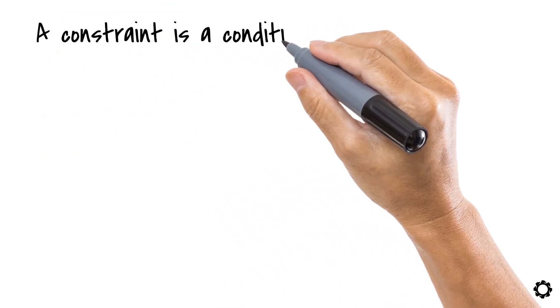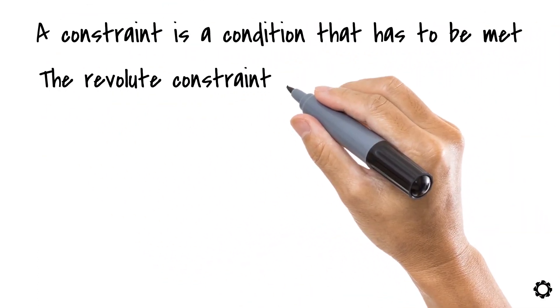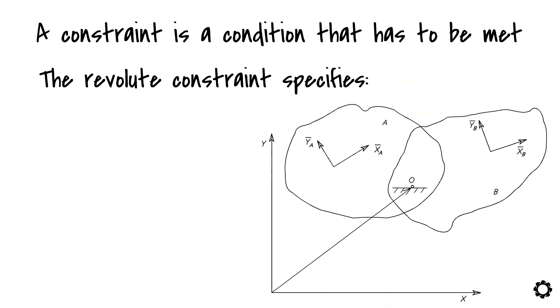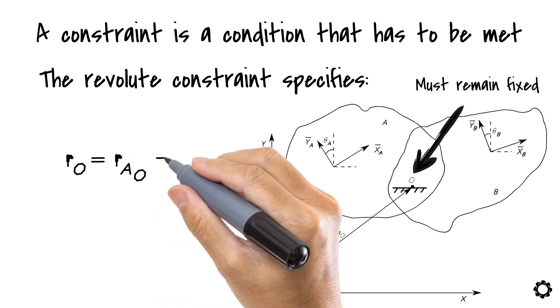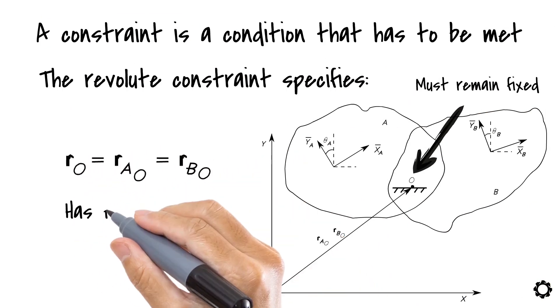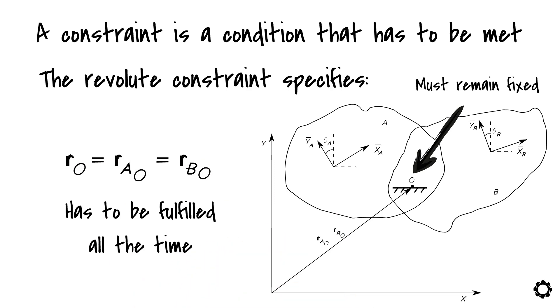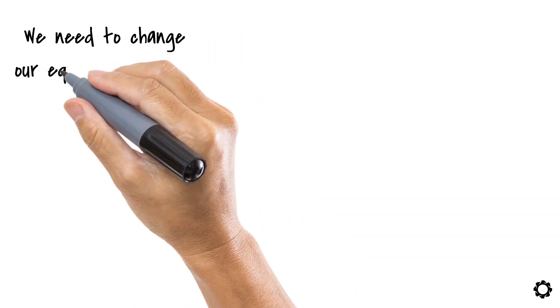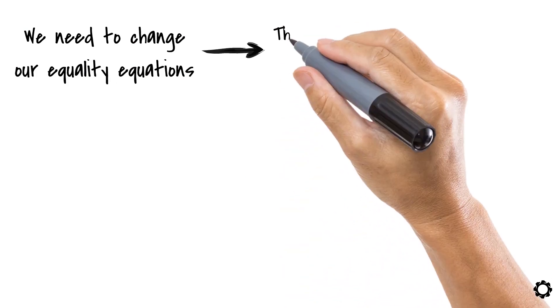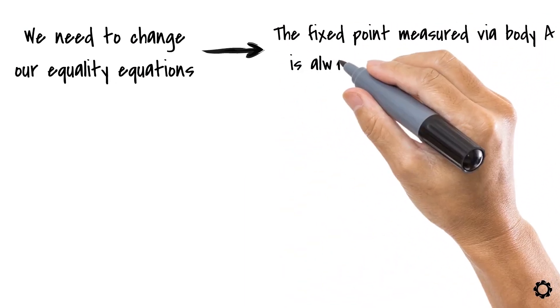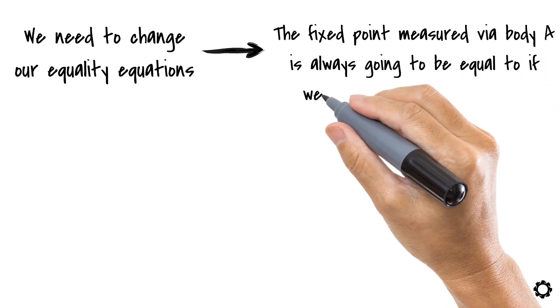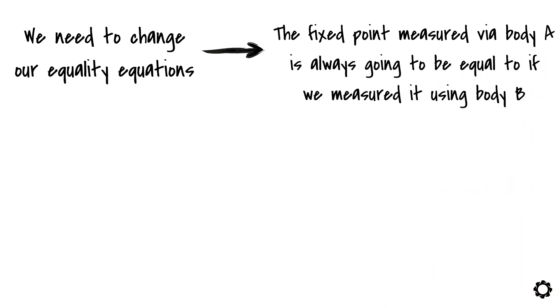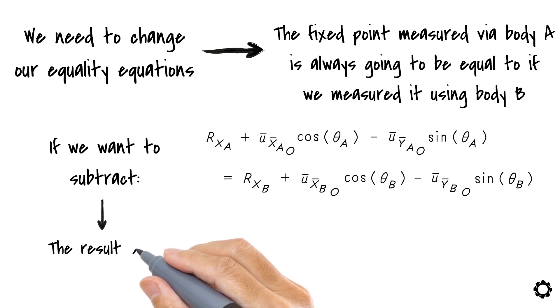A constraint is a condition that has to be met. The revolute constraint specifies that the fixed point relative to both bodies must remain fixed, meaning that the equation RO equals RAO equals RBO has to be fulfilled all the time. To say this mathematically, we need to change our equality equations to represent the condition that the fixed point measured via body A is always going to be equal to if we measured it using body B. That is, if we want to subtract the two Cartesian equations representing the X component, the result should always be zero.